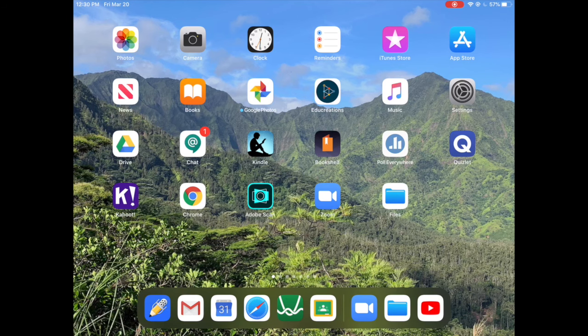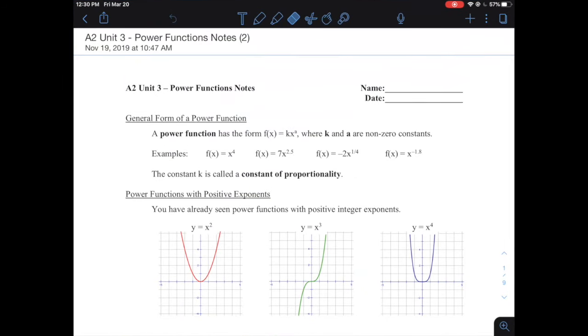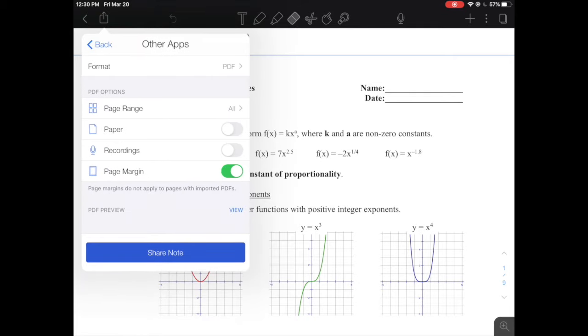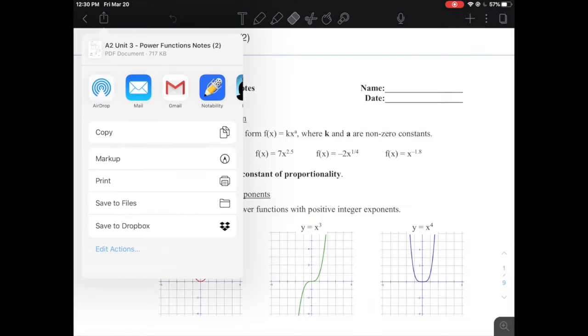So now that I have that all set up, I'm going to go back to Notability. When I'm in Notability, and this time when I hit that arrow pointing up on the left side, I'm going to do Other Apps and I'm going to say Share Note. And then you can see in the white box second to the bottom, it says Save to Files, and I'll tap on that.